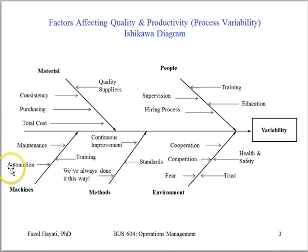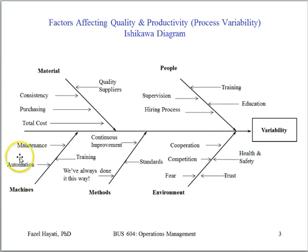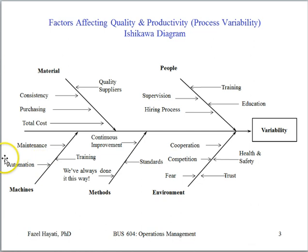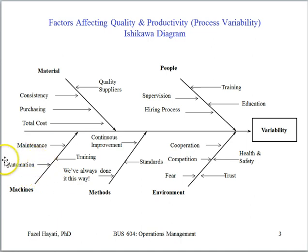One important point to highlight is that often we rely heavily on automation as a panacea — a cure-all for reducing variation in our processes. Although automation is a factor we have to consider, automation alone does not remove the causes of variability. If a process is subject to considerable variability and producing defectives, we have to really look at the causes of that before we proceed with automation.